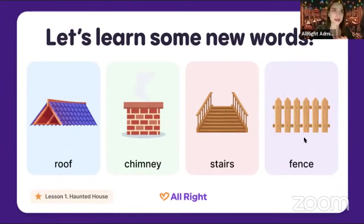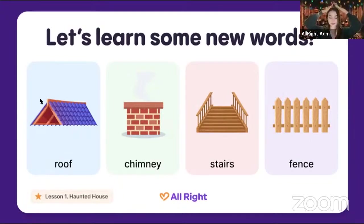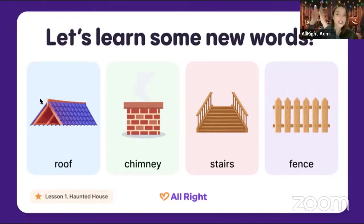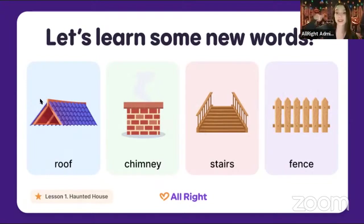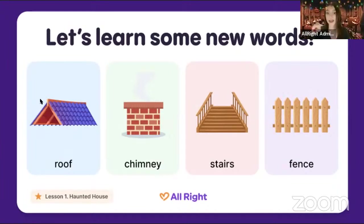Now let's repeat all four words and play a game. Tell me, do you like to play? I've got many games for you today! Let's repeat one more time: roof... chimney, it's on the roof... stairs, say it with me: stairs... and the last one: fence.